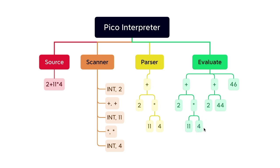And the right subtree evaluates to 4. And when we evaluate star, we evaluate the whole subtree 11 times 4, which is 44. Now we evaluate this tree, which is plus 2 and 44, and that evaluates to 46, and that is what we return.